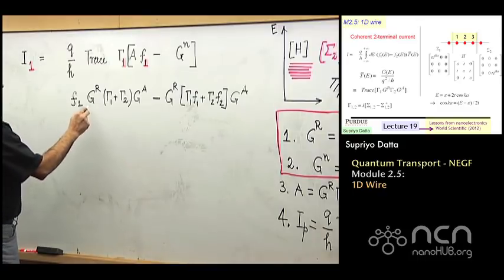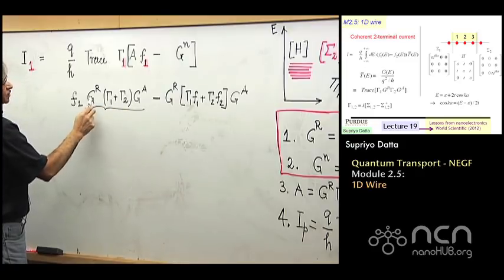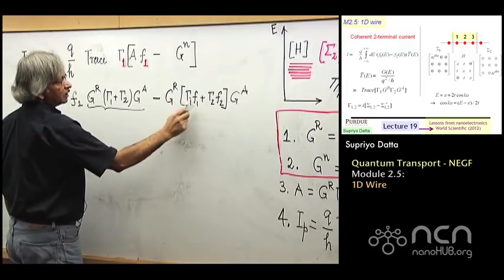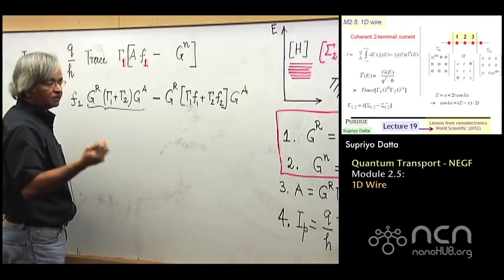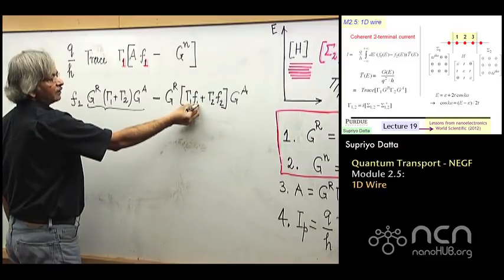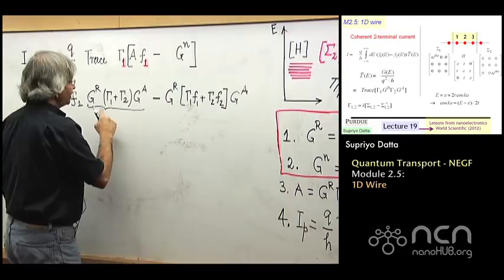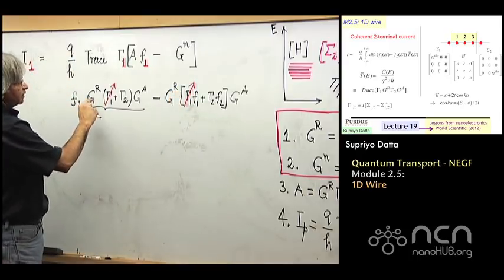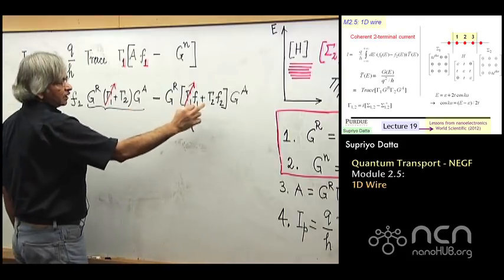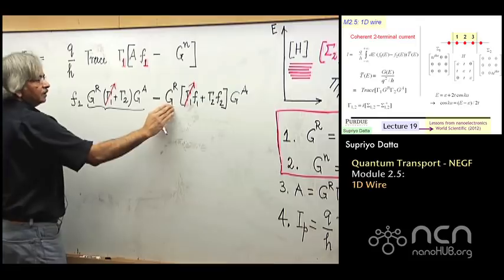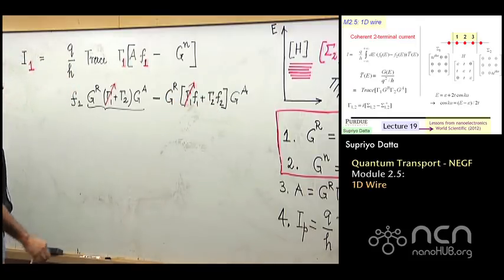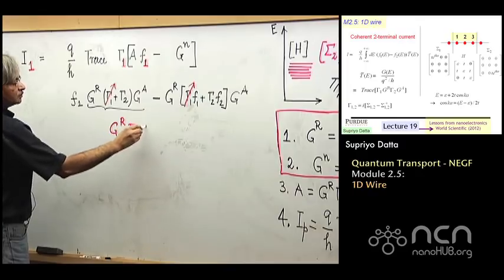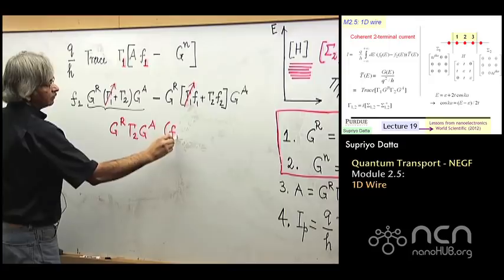And then you have GN, which is GR sigma in GA. And the sigma in has a gamma 1 F1 and a gamma 2 F2. So you could write it as GR gamma 1 F1 plus gamma 2 F2 times GA. Now if you look here, this first term is GR gamma 1 GA with an F1 here. Similarly, this is also GR gamma 1 GA with an F1. Now F1 is just a number - it's a Fermi function in contact 1. So I don't really need to have it here. I could always pull it out, put it somewhere else. So the point is that that term will exactly cancel that term.